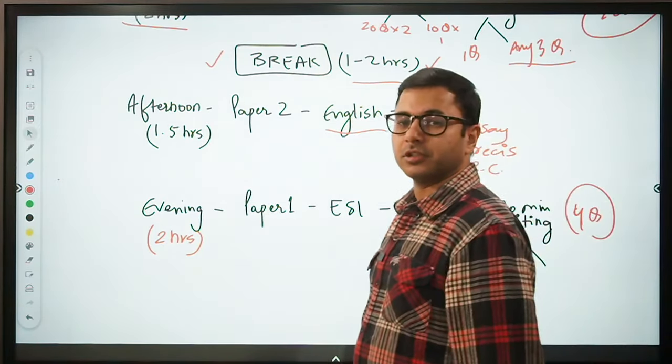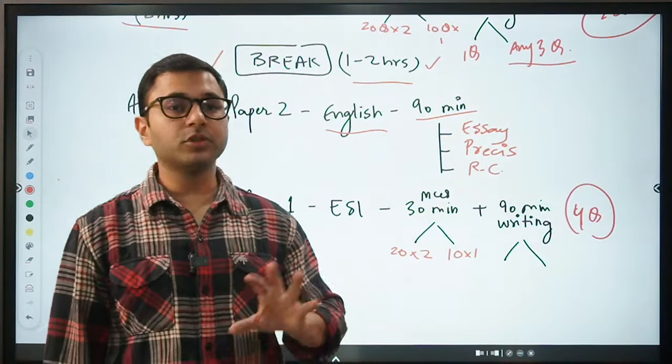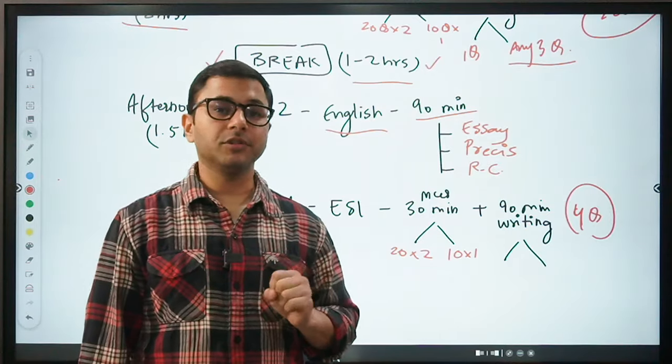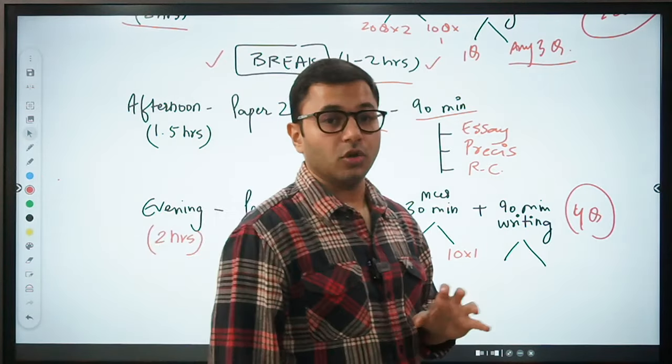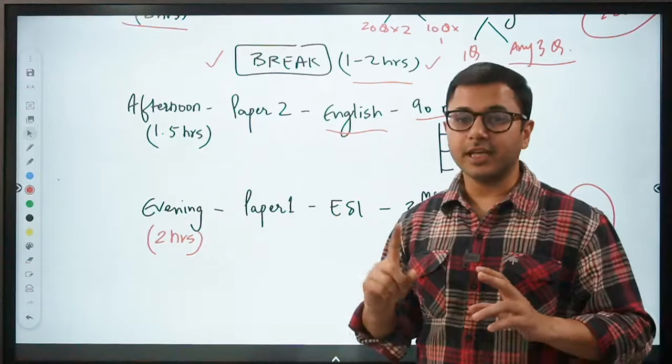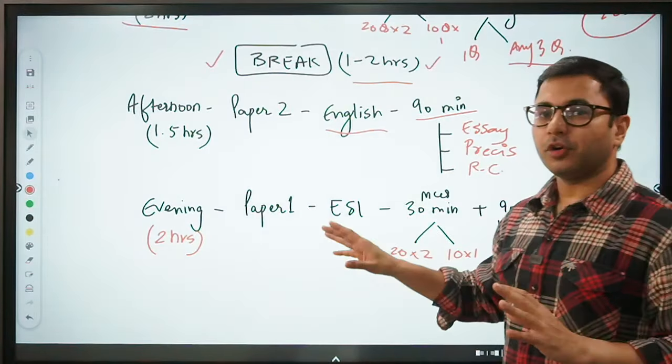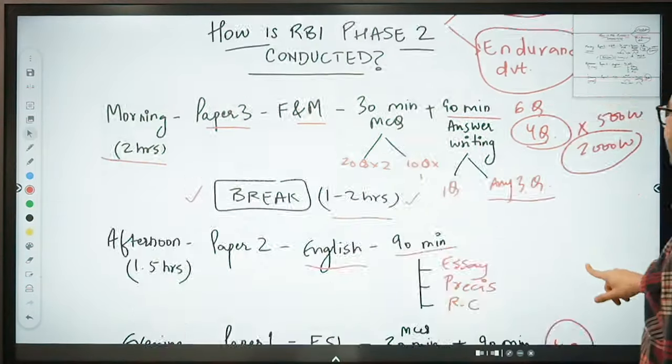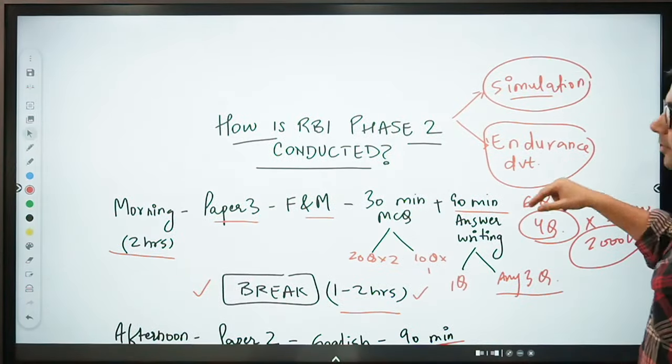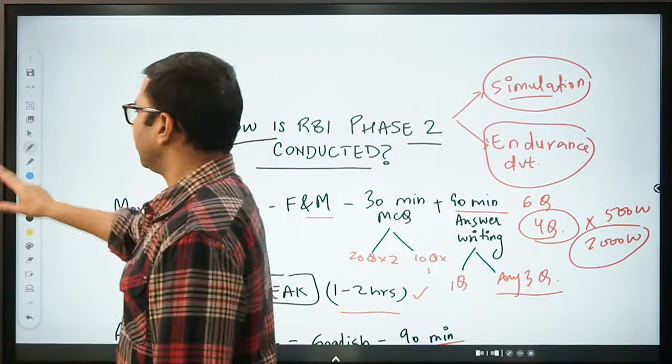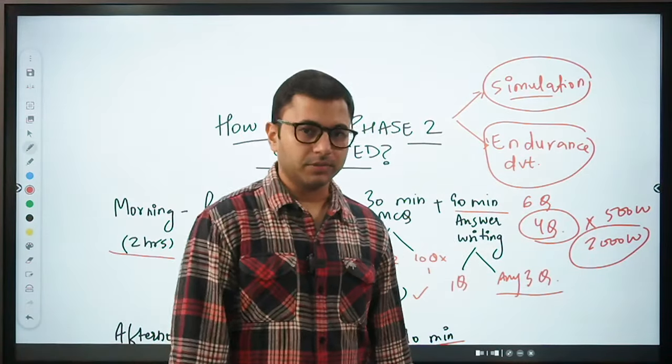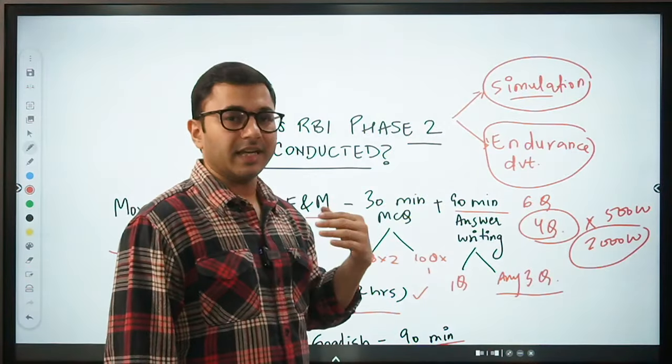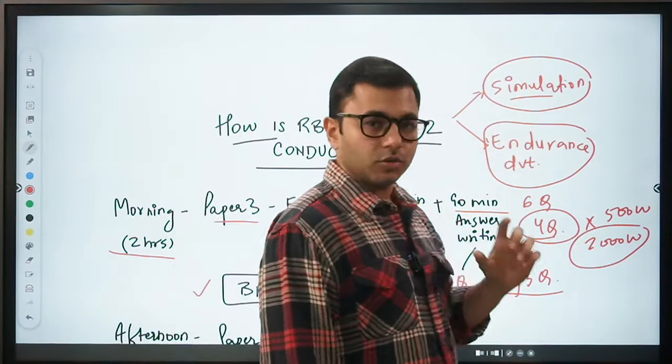So 270 minutes. If you divide 270 by 60, 6 times 5 is 30. It's almost five hours, four and a half hours, five hours you are writing. That's a lot of time for writing in one day. Four and a half hours writing in one day is a lot. You will not be able, it's like a 42 kilometer marathon. You will not be able to do it unless you have simulated it in the past and you have developed your endurance. If you haven't done it then you will not be able to do it. Then you will mess up your papers. So please keep this in mind.